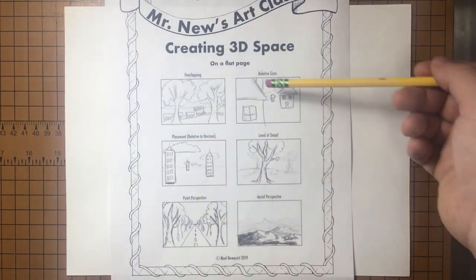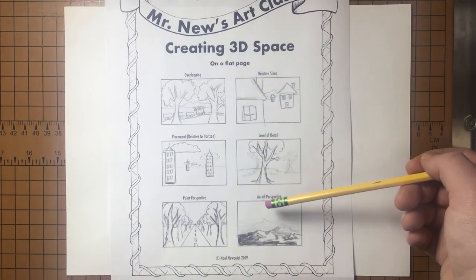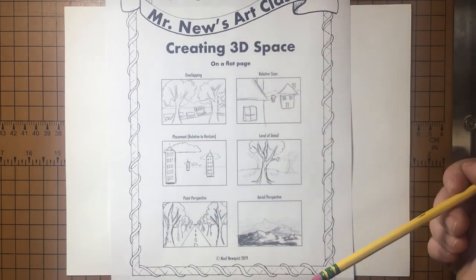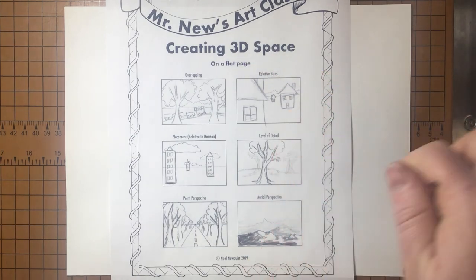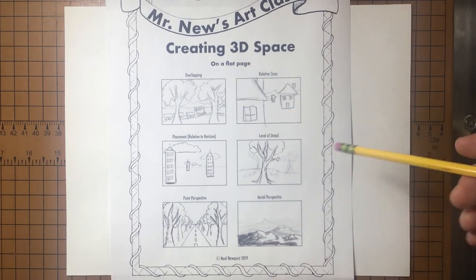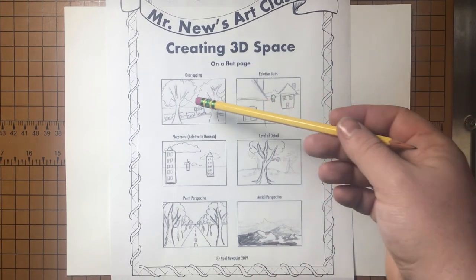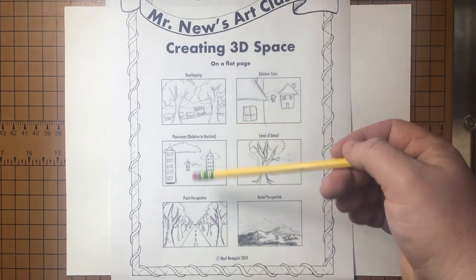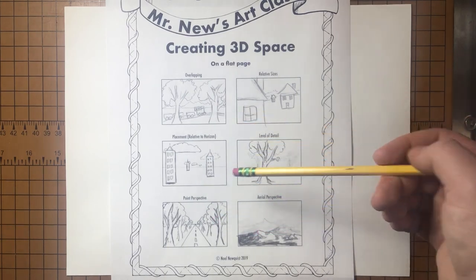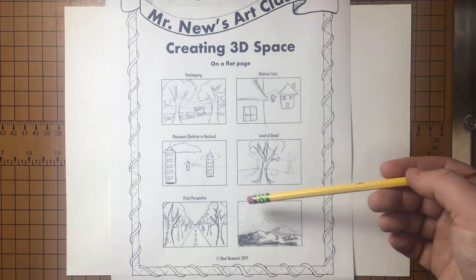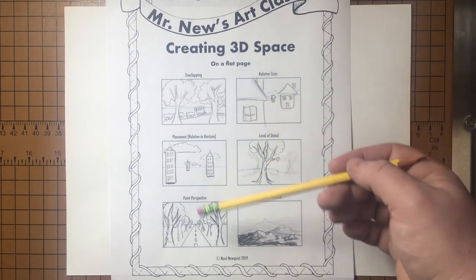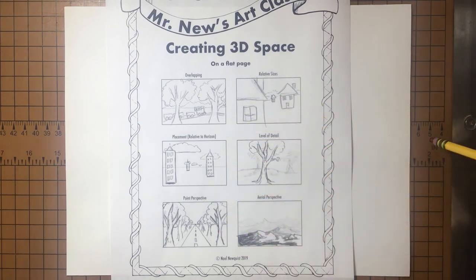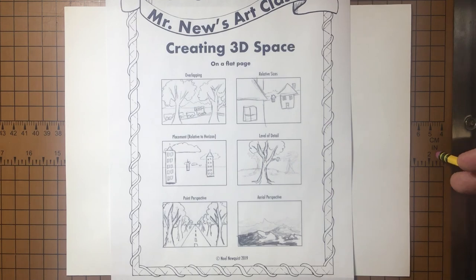So there you have it — that's six different ways to create 3D space, or the illusion of 3D space, on a flat sheet of paper. Notice how each method kind of adds on and plays off of each other in a lot of good ways. Go ahead and practice these and see what you can make — see what kinds of 3D spaces you can create.